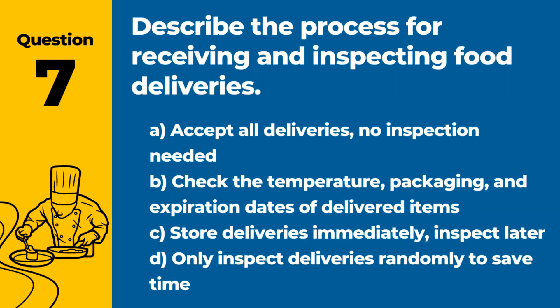Question 7. Describe the process for receiving and inspecting food deliveries. Answer: B. Check the temperature, packaging, and expiration dates of delivered items. Proper inspection ensures that only safe and high-quality foods are accepted.